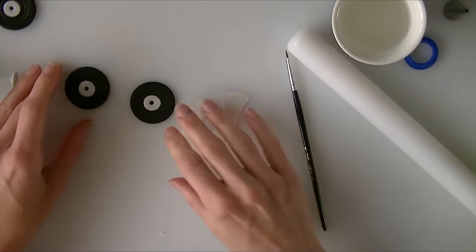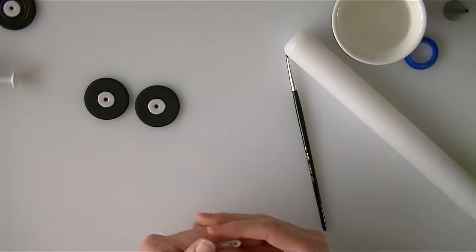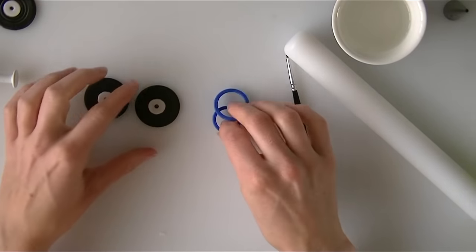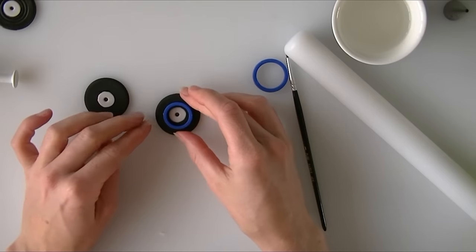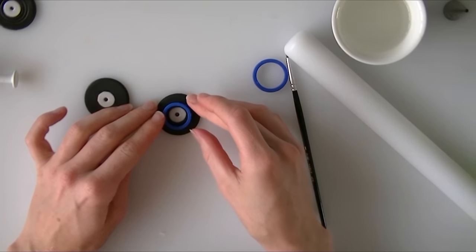Now you can leave them like that if you like them quite plain or you can add a couple more lines to them. So I have got a couple more circles that are different sizes and I am just going to push that around the one that I have got in the centre so try and get it as central as you can. And just push in so that you are getting another line.